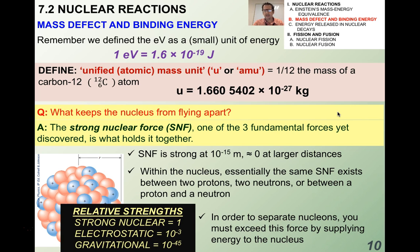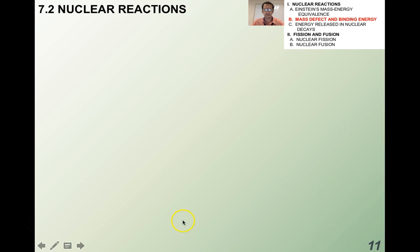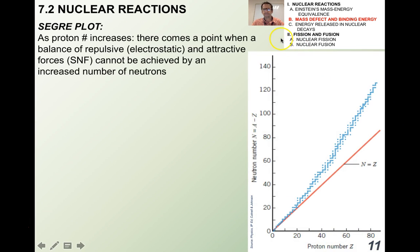Just to give you an idea of the relative strengths of the fundamental forces: if the strong nuclear force equals one, you can see how much smaller the gravitational force is, and even how much smaller the electrostatic force is. Remember the gravitational constant and K in Coulomb's law — that will remind you of the relative strengths of these forces.